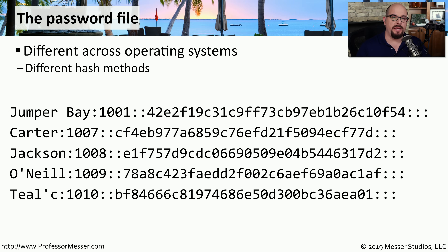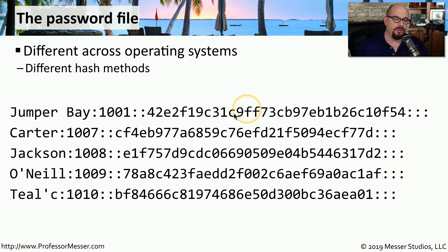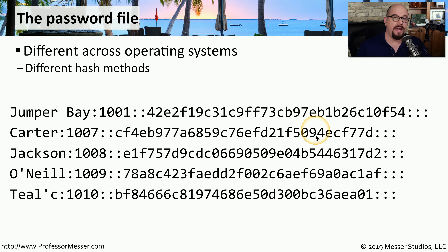If you were to see the storage of usernames and passwords on a computer system, you would see that the passwords are not stored in plain text. Instead, passwords are hashed, and the hash is what is stored in the password files. This hash is a one-way cryptographic process, which means the creation of the hash builds out this particular value, but there's no way to reverse the process to know what the original password happened to be. If Carter were to log in with her username and password, the password she provided would be hashed, and that hash would be compared to the hash stored in the password file. And if those two hashes were to match, then we know that Carter used the correct password.